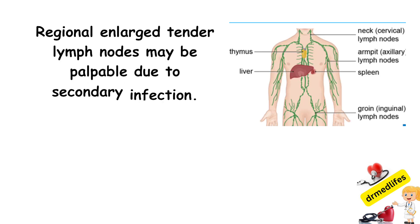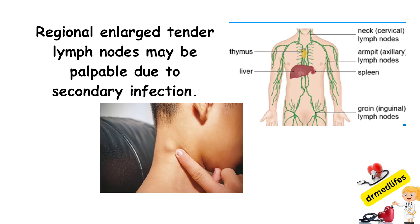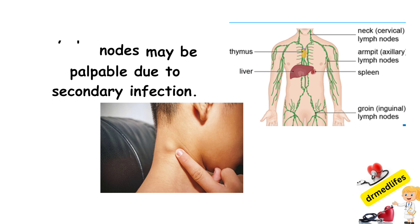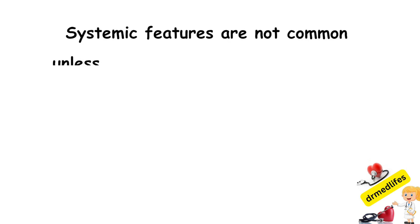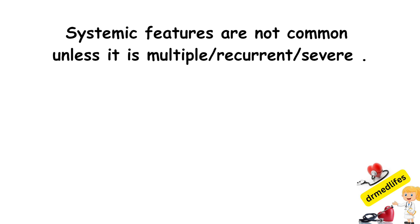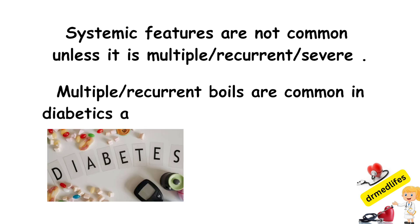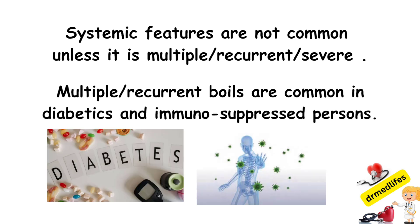Regional and large tender lymph nodes may be palpable due to secondary infection. Systemic features are not common unless the boil is multiple, recurrent, or severe. Multiple or recurrent boils are common in diabetics and immunosuppressed persons.